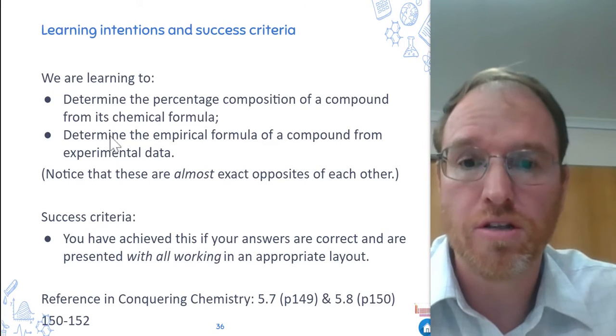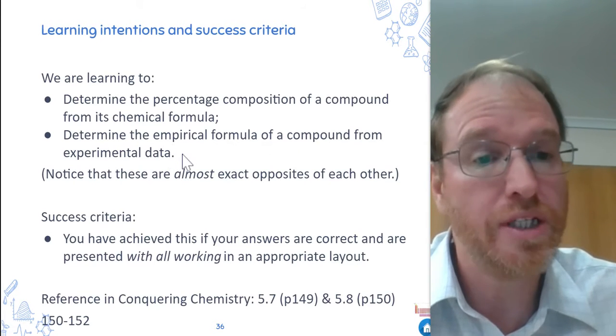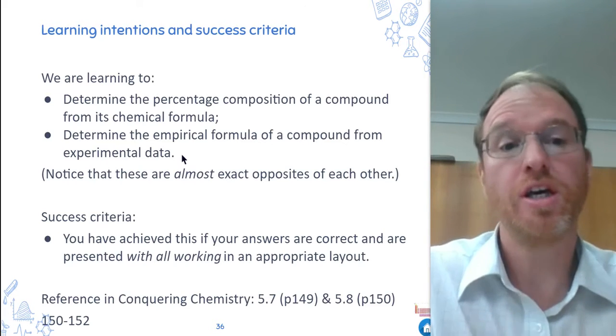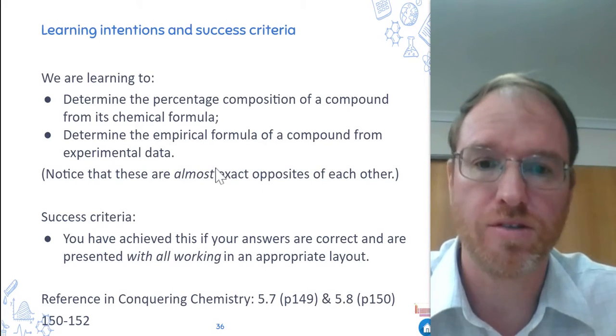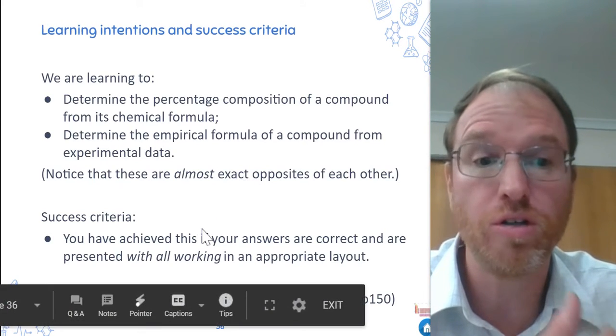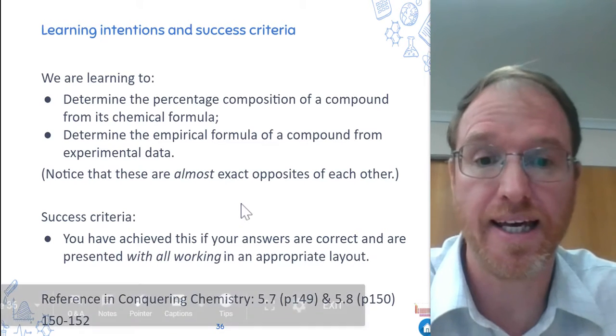And then the opposite, determine the empirical formula of a compound from experimental data. So if we did an experiment and found water has a certain mass of hydrogen and mass of oxygen, can you work out the formula from that? So they're almost exact opposites, but not exactly. And you'll have achieved this if you can do the calculations and get the correct answer and have clear layout, that's important.